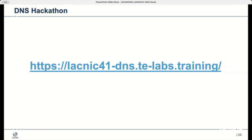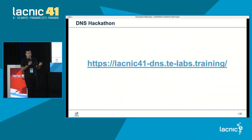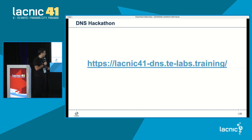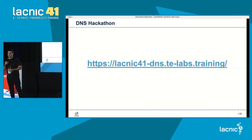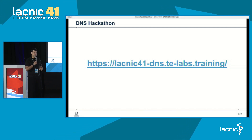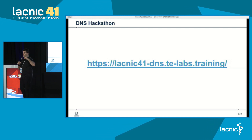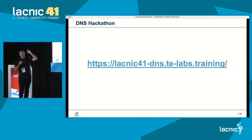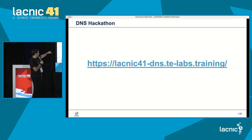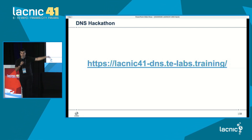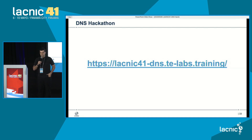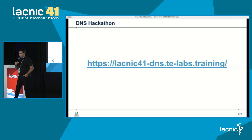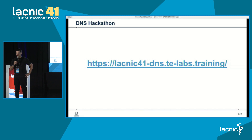Van a haber configurado un servidor autoritativo oculto con bind, dos servidores autoritativos públicos —uno con bind y el otro con NSD—, un servidor de correo electrónico configurado como secundario, dos recursivos —un bind y un unbound—. Van a tener que firmar la zona en el autoritativo, transferirnos el registro DS para que lo podamos ingresar en el padre de la zona del laboratorio, que es el servidor autoritativo para LACNIC41DNS.tlabs.training. Y configurar otras características de DNS de seguridad, privacidad y optimización que vamos a repasar ahora con Carlos.